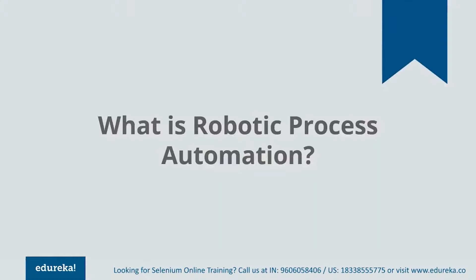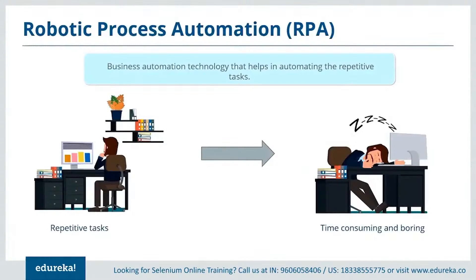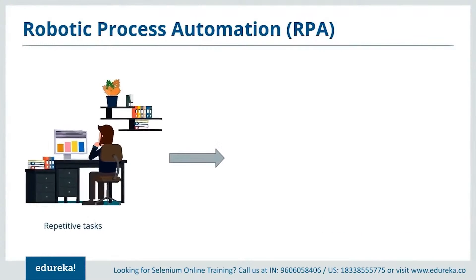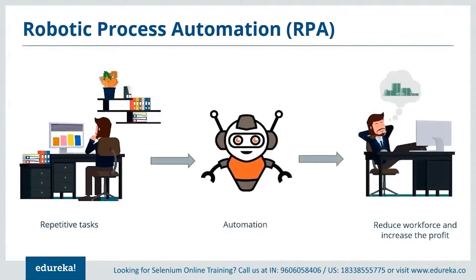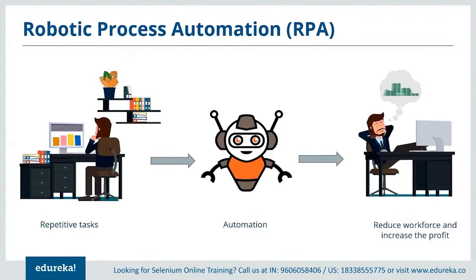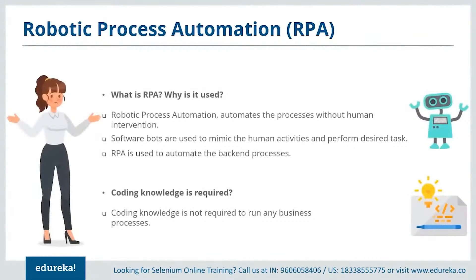Now let's move on to understand what is robotic process automation, commonly called RPA. Repetitive tasks take most of our time, which gradually decreases productivity and results in the downfall of an organization. If we try to complete the same task by automating it, the time taken is reduced, productivity increases, and the number of errors are reduced. RPA was coined with the vision of empowering business users to create software bots that interact with the system just like humans. It is a combination of artificial intelligence and automation.